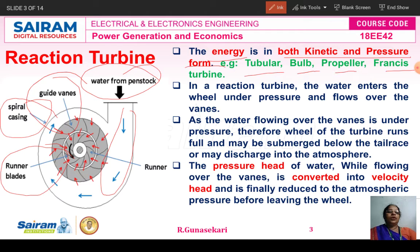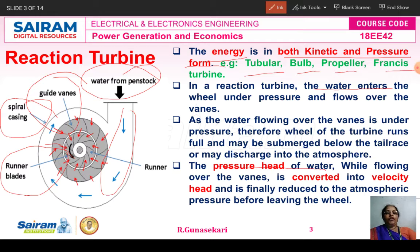In the reaction turbine, the water enters the wheel under pressure and flows over the vanes. The water flowing over the vanes is under pressure. Therefore, the wheel of the turbine runs full and may be submerged below the tail race or may discharge into the atmosphere. The pressure head of the water flowing over the guide vanes is converted into velocity head, and finally it is reduced to atmospheric pressure before leaving the wheel. This is the general concept of the reaction turbine.